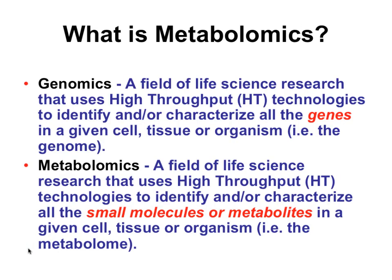Metabolomics grew from the term genomics — it was a wannabe thing. You can use essentially the same definition: it's a high-throughput field of science where technologies are used to characterize small molecules or metabolites in cells, tissues, and organisms. It still requires high-throughput technologies and typically looks at multiple systems — tissues, individual cells, or entire organisms. What we study in metabolomics is the metabolome, just as genomics studies the genome and proteomics studies the proteome.